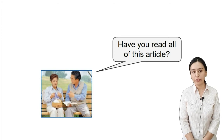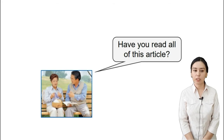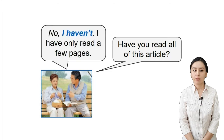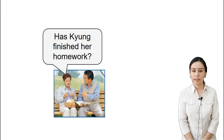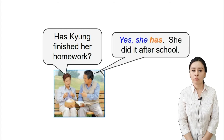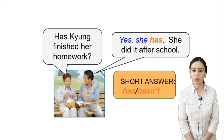Now, time for short answers. 'Have you read all of this article?' — 'No, I haven't. I have only read a few pages.' Short answers use 'have' or 'haven't'. Next, third person singular: 'Has Kyung finished her homework?' — 'Yes, she has. She did it after school.'